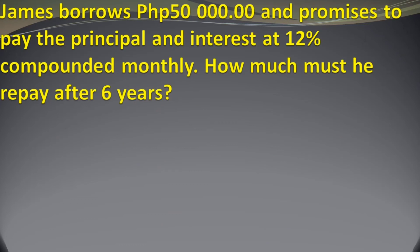Next example: James borrows 50,000 and promises to pay the principal and interest at 12% compounded monthly. How much will he repay after 6 years? Let's identify the given in the problem.